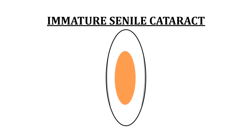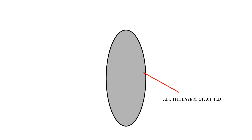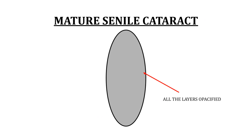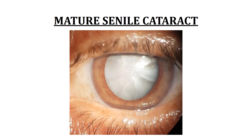In an immature senile cataract, some parts of the lens are opaque while some are clear. As the process of cataract formation progresses with time, all the layers of the lens get opacified and this stage is known as a mature senile cataract — as you can see in this picture here, where the entire lens has become white or opaque.